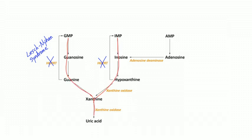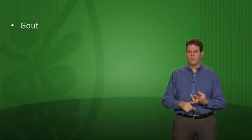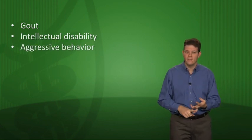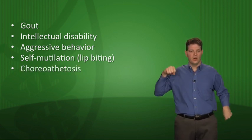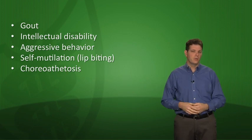If you're deficient in HGPRT, it causes Lesch-Nyhan syndrome. Without HGPRT, you can't recycle or salvage purines, so everything gets pushed downstream and you overproduce uric acid, causing gout. Lesch-Nyhan findings also include CNS problems: intellectual disability, aggressive behavior, and self-mutilation — classically lip biting — as well as choreoathetosis (writhing choreoform involuntary movements). Treatment includes allopurinol for hyperuricemia, but there's no drug for the neurologic features.